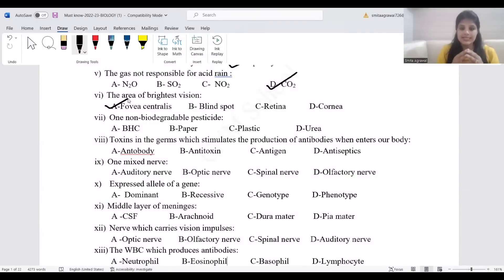Fovea centralis is present on the center of retina just at the axis of pupil. Blind spot is a place where no image is formed. Retina is a photographic plate of eye where the image is formed.